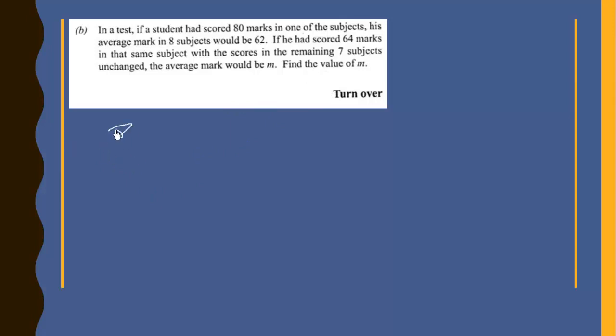So we have scored 80 marks. The average mark would have been equal to 62. And we know that the mean, we find it by summing up all the scores the person had in the subjects, which is sigma x, and we divide it by the number of subjects, which is 8.